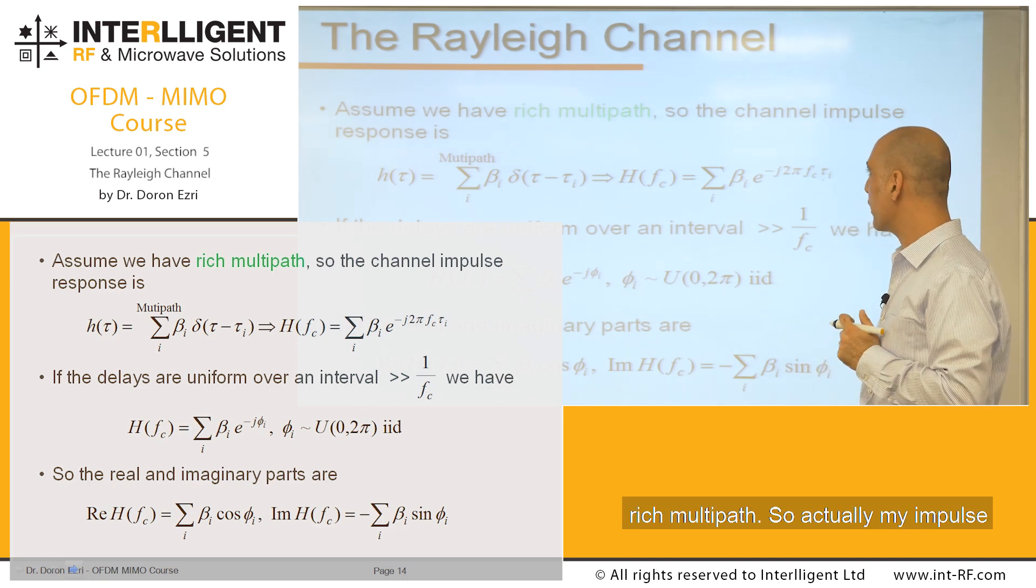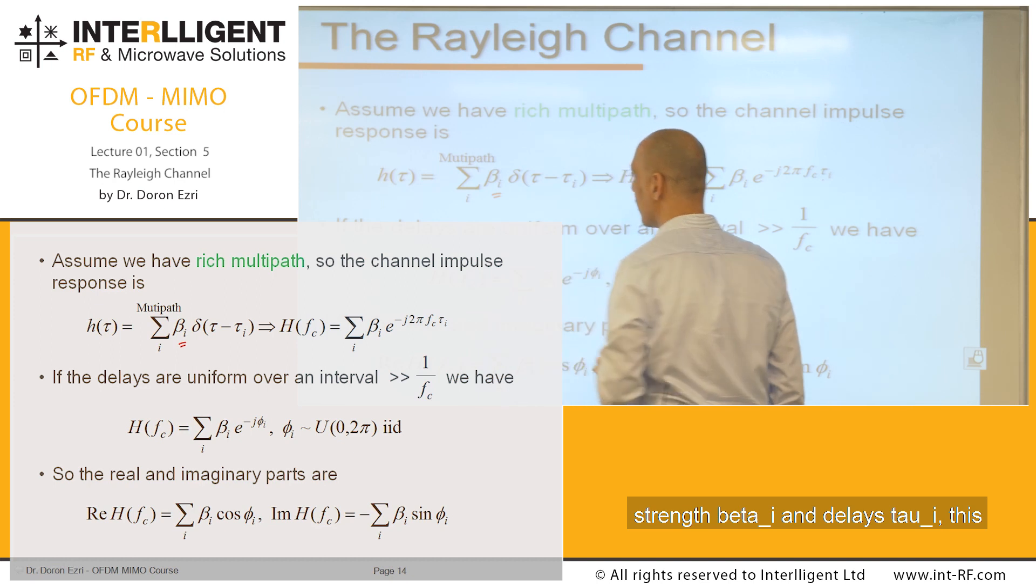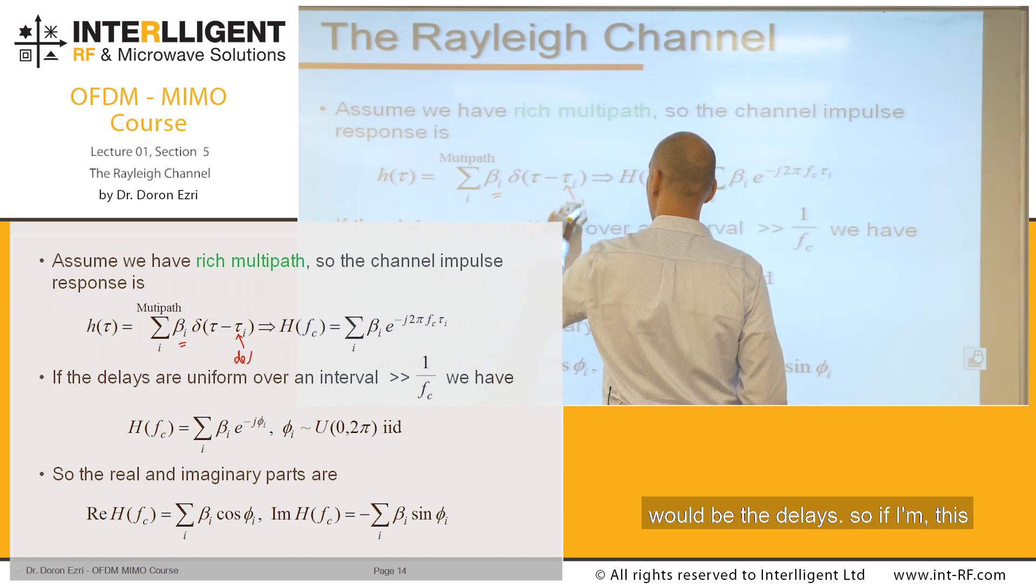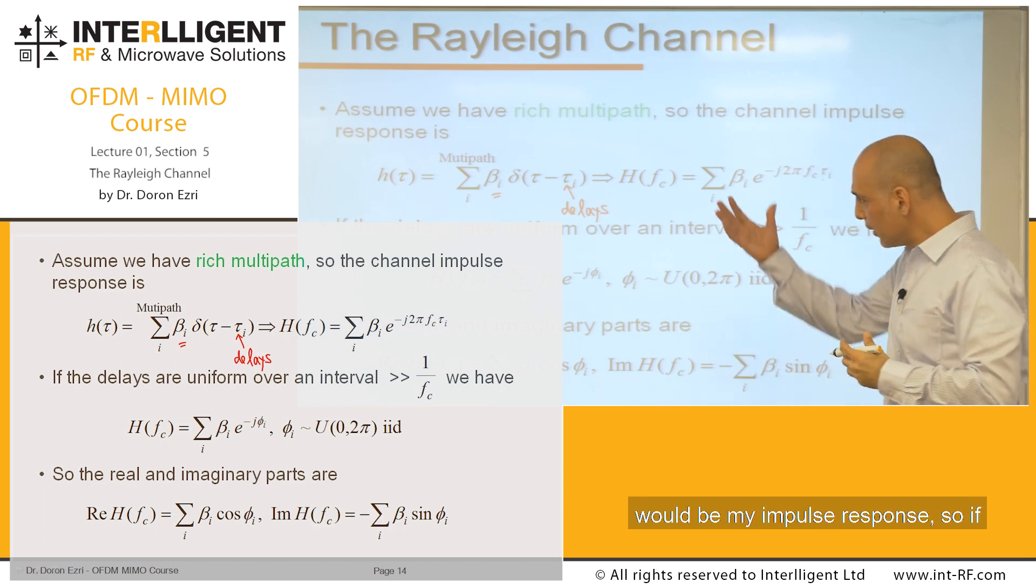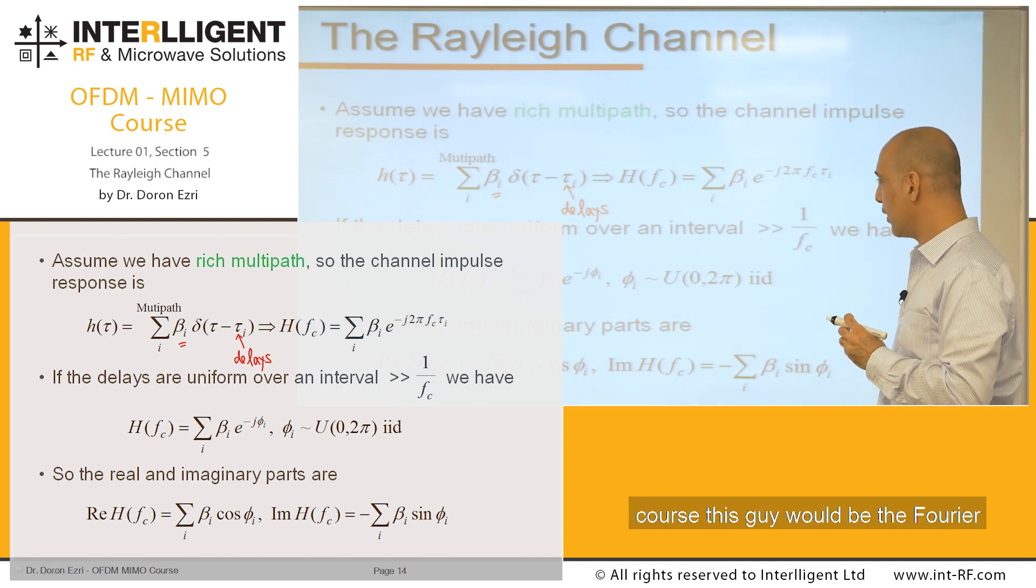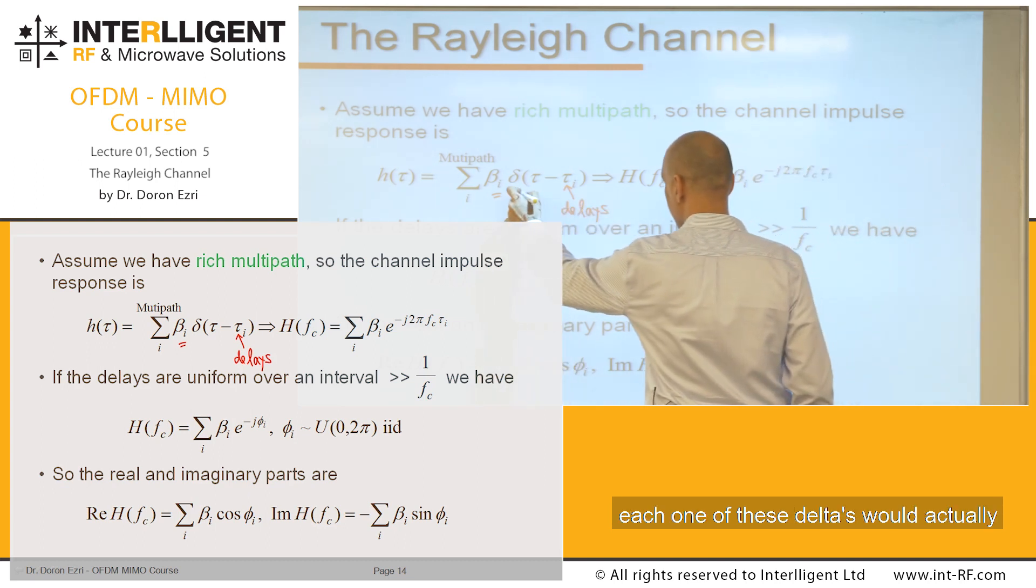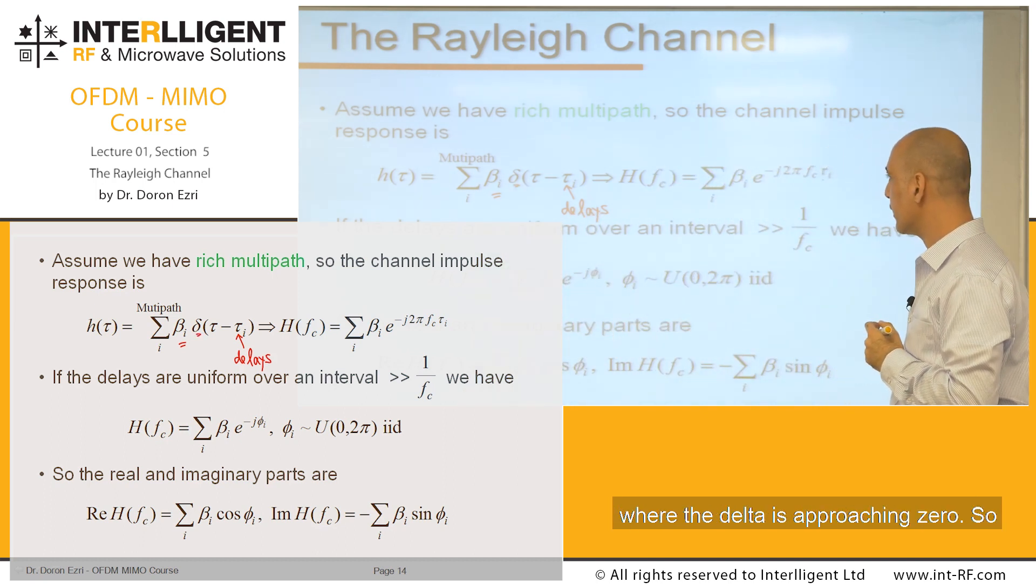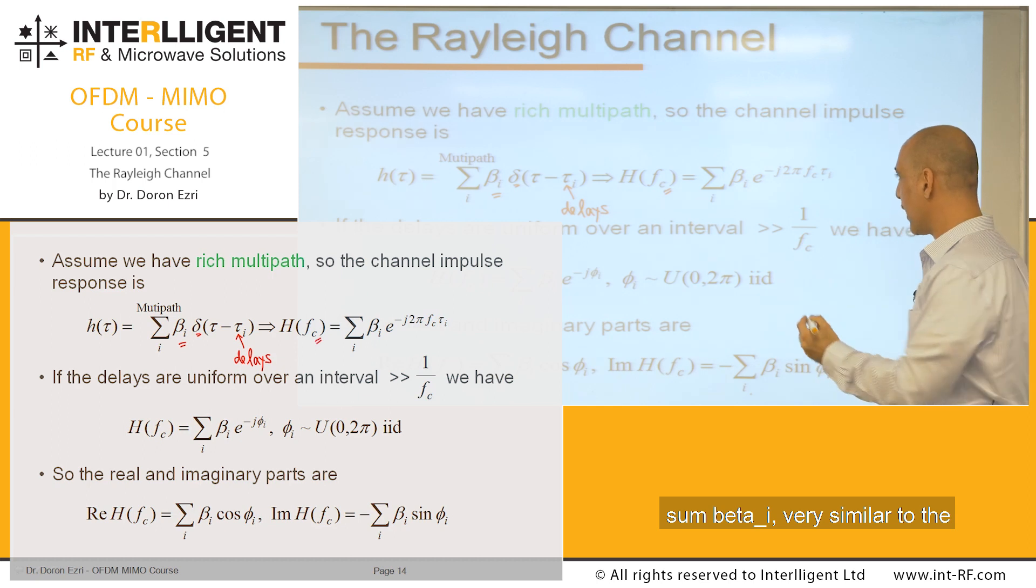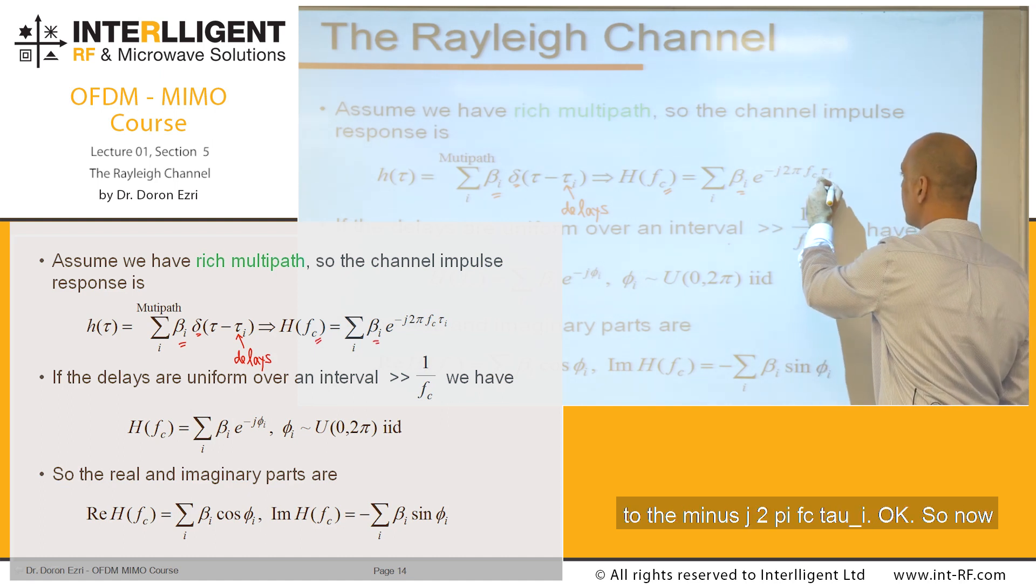I'm assuming rich multipath. So my impulse response would be reflections with strength beta_i and delays tau_i. If I'm interested in the frequency response or the transfer function, this would be the Fourier transform of the impulse response. So each delta translates into a rotating exponential e^(-j*2π*fc*tau_i).